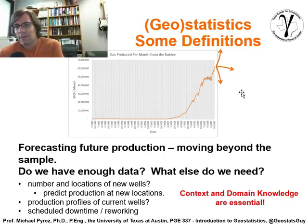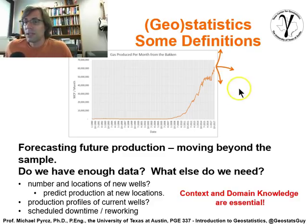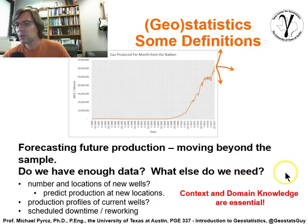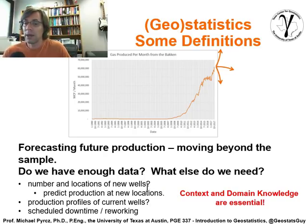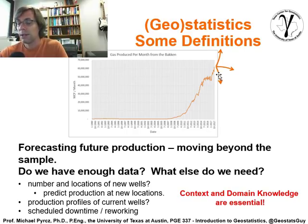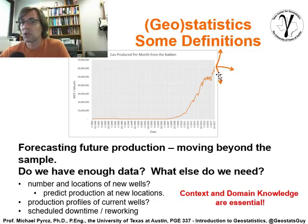Forecasting is a very interesting thing. Forecasting future production — moving beyond the sample dataset — would be very hard to do. You could treat it like a statistical problem, just fit a trend line or apply a linear trend. But maybe we don't have enough data. To do a good job of forecasting, we'd probably want to know the number and location of new wells, the schedule for new drilling, when wells will come online, what the decline rate is for available wells, and what's going on with downtime and reworking. All of this information would greatly improve our forecast. Context and domain knowledge are essential — we should use statistics to support our domain knowledge in answering scientific questions about the subsurface.